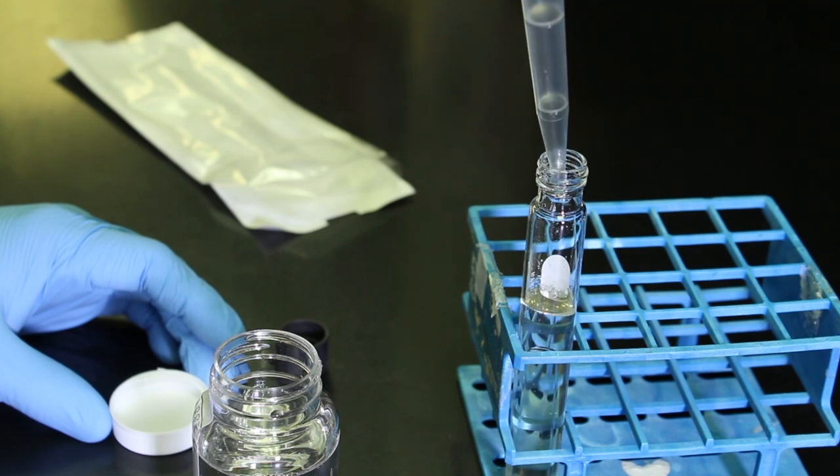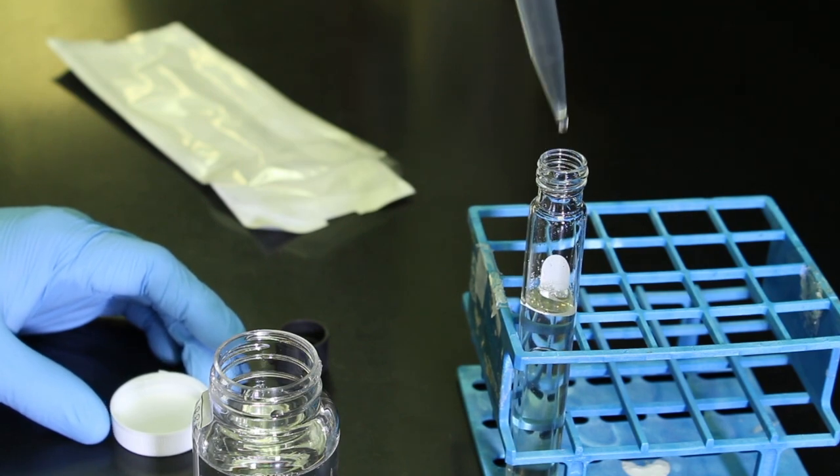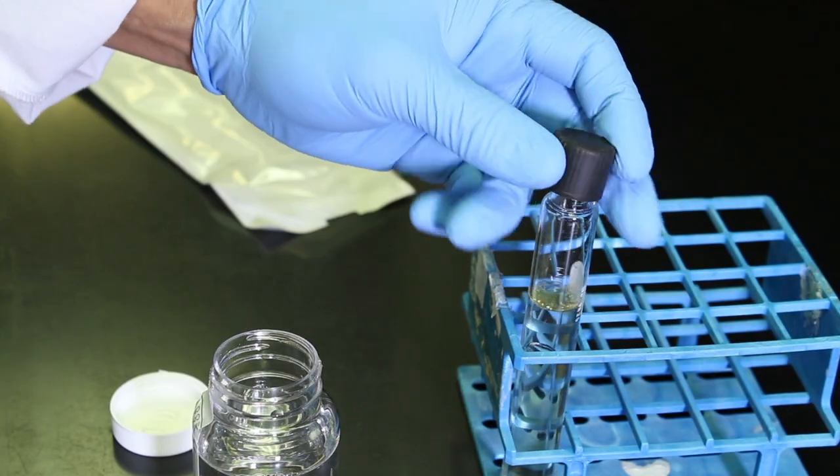If coliforms are present in the sample, they will use this sugar as a food supply and will produce carbon dioxide gas as a waste product. Any gas produced will be trapped within the smaller, inverted tube inside the main test tube.